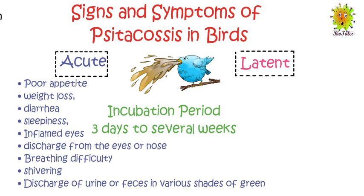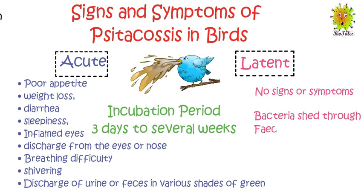The bird infected with psittacosis can also exhibit latent infection. In latent infection, the bird looks healthy and doesn't show any signs or symptoms, but it remains a carrier of the infectious agent. The Chlamydia psittaci bacteria are shed intermittently or continuously from the bird through feces or nasal discharge. This shed bacteria remain active for several months and can transmit the disease to other birds and humans.